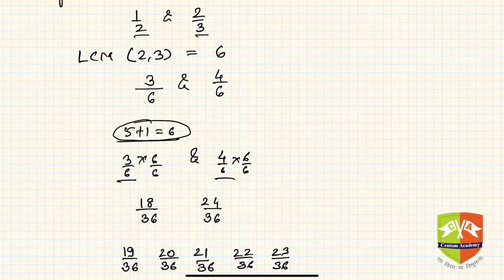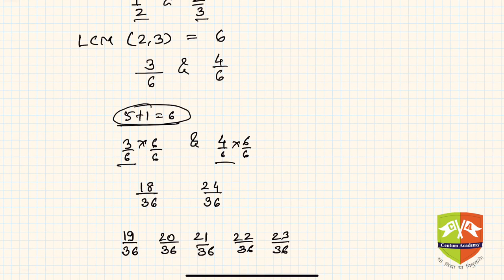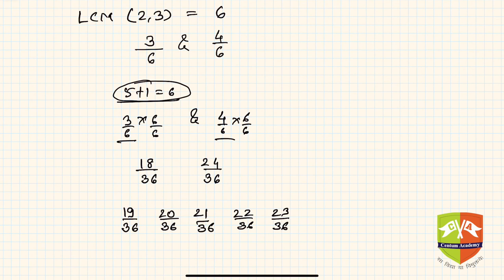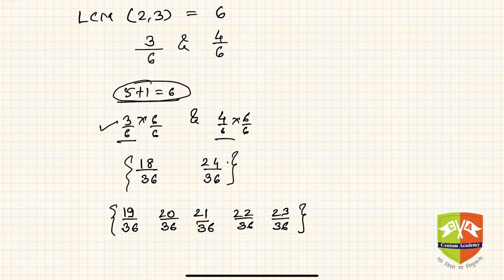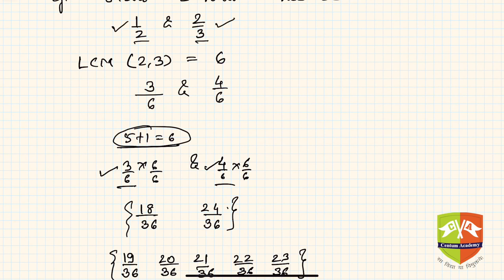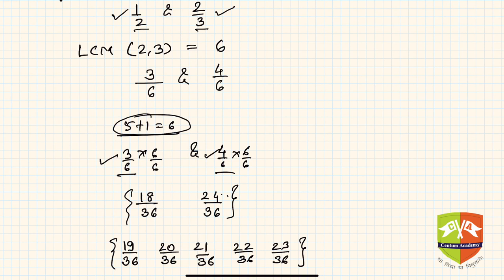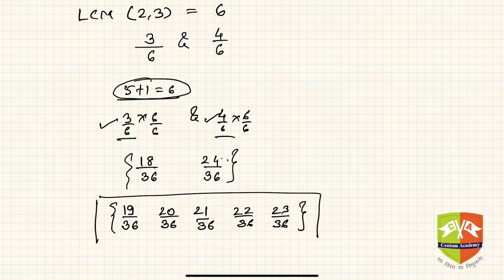It is important to add 1 to the desired number of rational numbers to be inserted — that gives you extra values to pick from. These five fractions lie between 18/36 and 24/36, which are the same as 1/2 and 2/3. So we have found five rational numbers between the two given rational numbers. You will get more clarity when you go through the problem-solving sessions. Thank you.